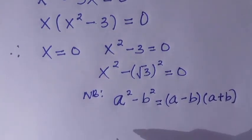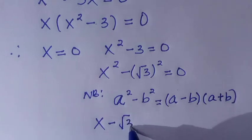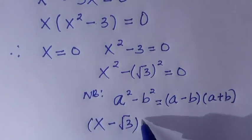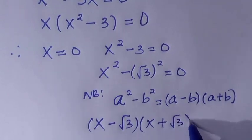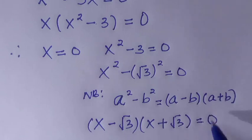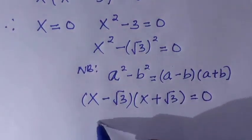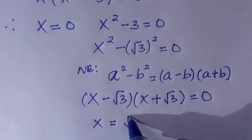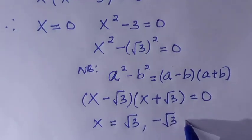Here is what we are going to have. We apply it where we have x minus square root of 3 times x plus square root of 3 equals 0. By the properties of zero, we have x equals √3 or x equals -√3.